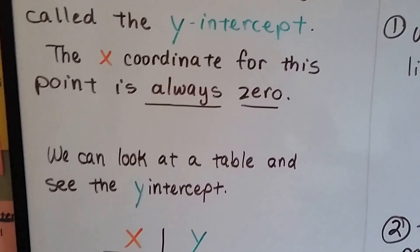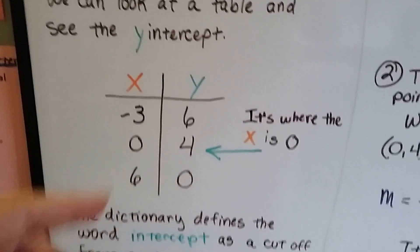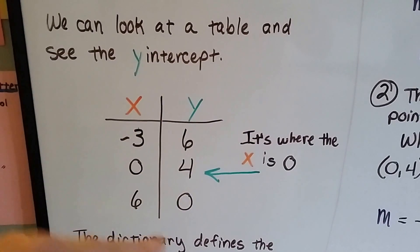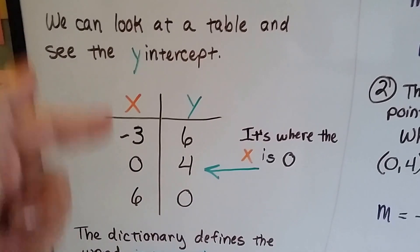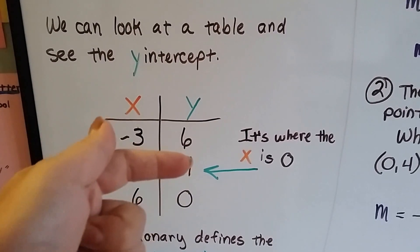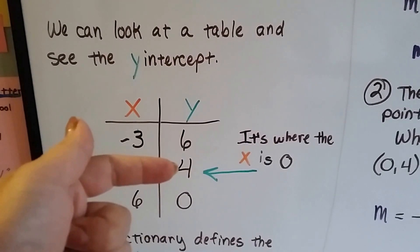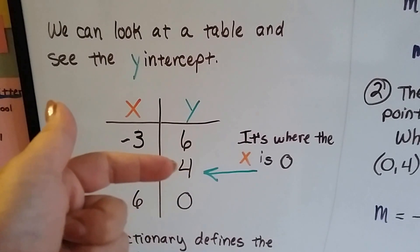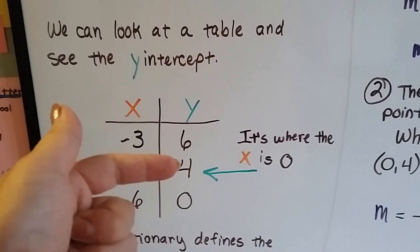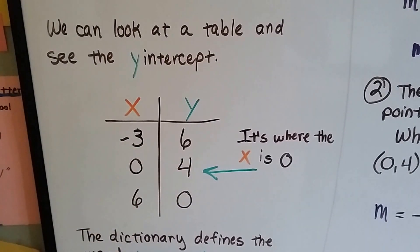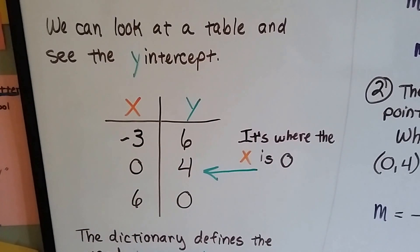The x-coordinate for this point is always 0. We can look at a table and see the y-intercept. On this table, because the x is always 0, that tells us right away, there it is. The y-intercept is 4. That's where the x is 0 and the y is something other than 0. So our y-intercept is 4.